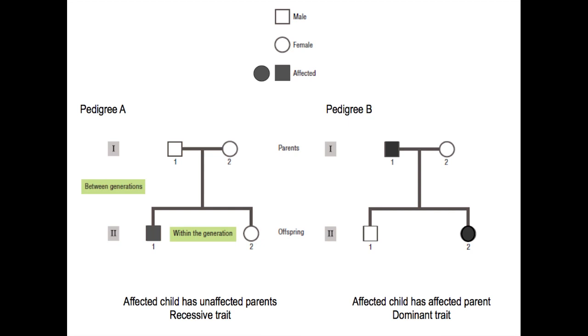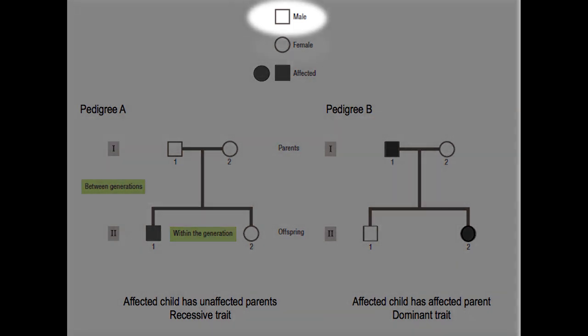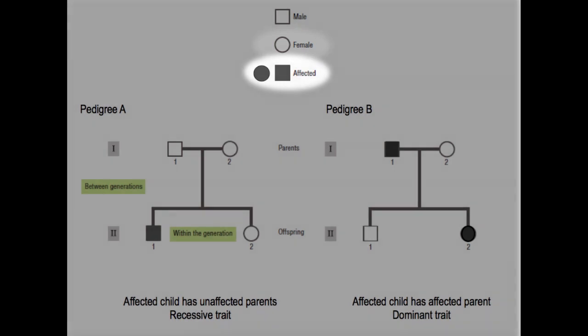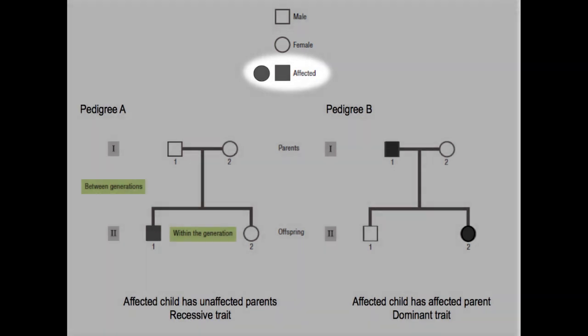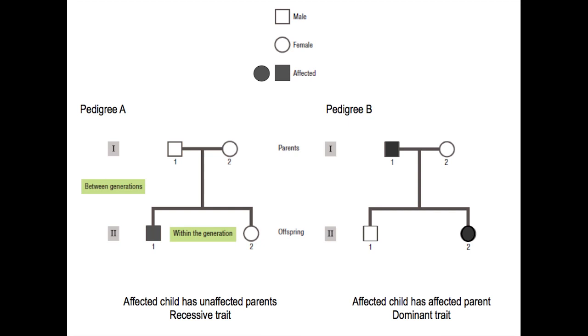A pedigree diagrams parents and their offspring over several generations. Remember that males are depicted as squares and females as circles. A filled symbol is an affected individual, someone who shows the phenotype of interest, and open symbols are individuals who are not affected.